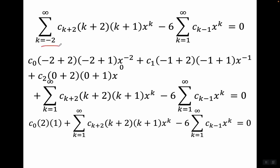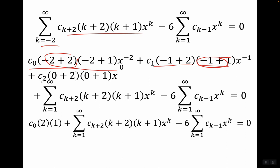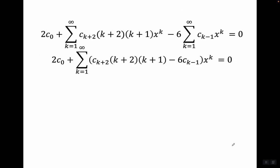To start both series at the same place, let's write out the first few terms of the first series. The k equals negative two term and the k equals negative one term both turn out to be zero, so they just drop out. All we're left with is the k equals zero term — which gives c zero times two times one — plus the two series starting at k equals one. This simplifies to c zero times two times one, plus the first series minus six times the second series.